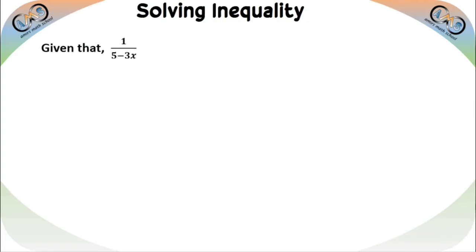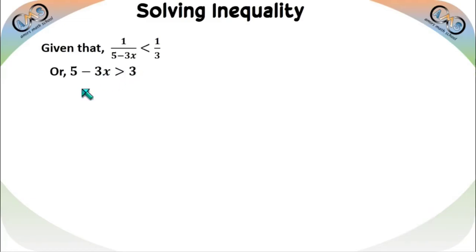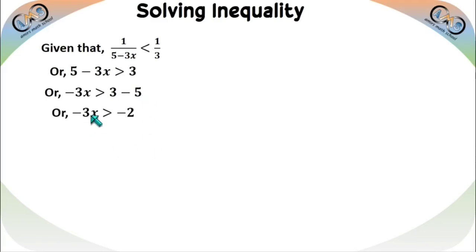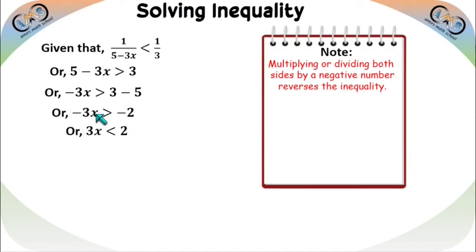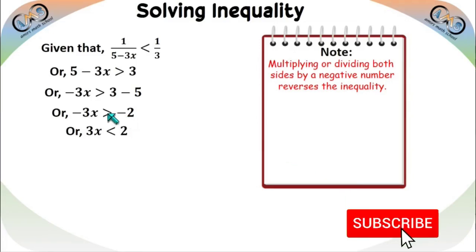Now the third type: given 1/(5−3x) < 1/3. Here the sign before the variable is negative. Taking reciprocals on both sides gives 5−3x > 3. Subtracting 5 from both sides: −3x > 3−5, so −3x > −2. Note: multiplying or dividing both sides of an inequality by a negative number reverses the inequality sign.